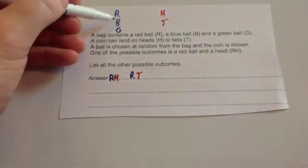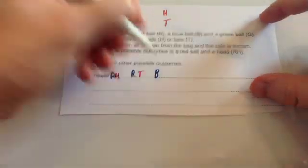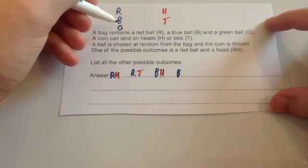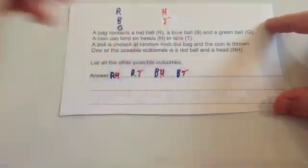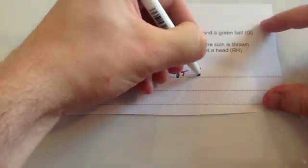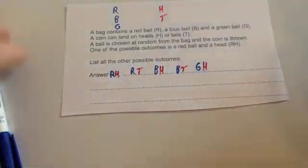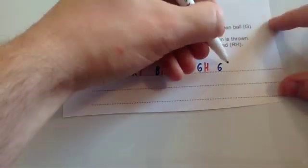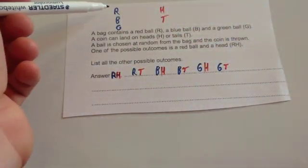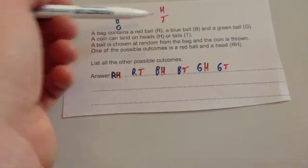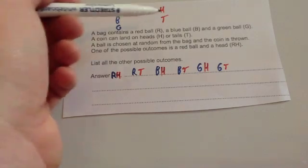Then we could get a blue and a head. Or a blue and a tail. And finally we could get a green and a head. Or we could get a green and a tail. So notice we went through our question systematically. We've done red head, red tail. Blue head, blue tail. Green head, green tail.